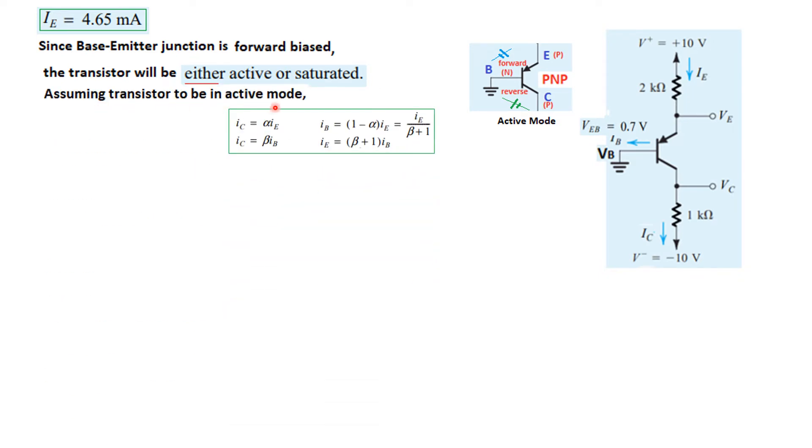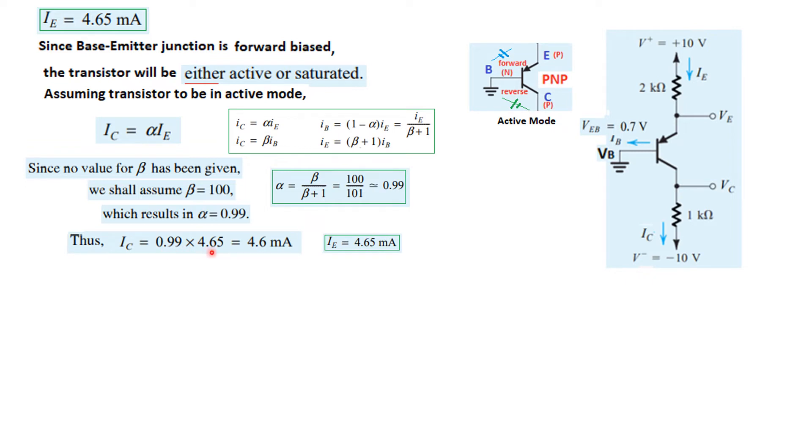So, assuming the transistor to be in active mode and when the transistor is in active mode, then all these formulas, they are applicable. So, we will use this formula now to find the other parameters. IC is alpha IE, IE we already know, alpha we don't know, alpha can be calculated from beta. This formula, we assume beta to be 100 because it is not given. So, we assume it to be 100 and so alpha is 0.99. And now, putting in the values, IC is 0.99 into IE, which is 4.6 milliampere.